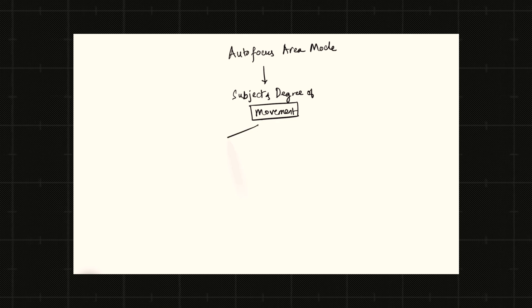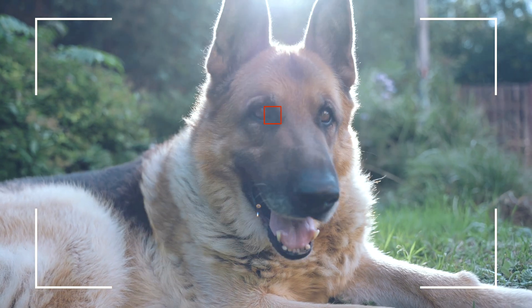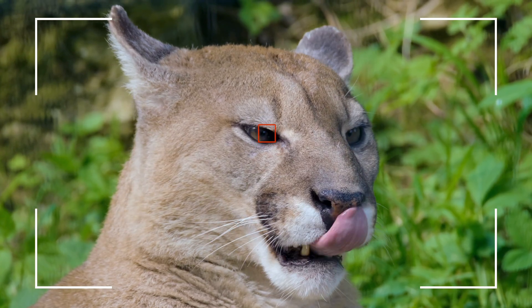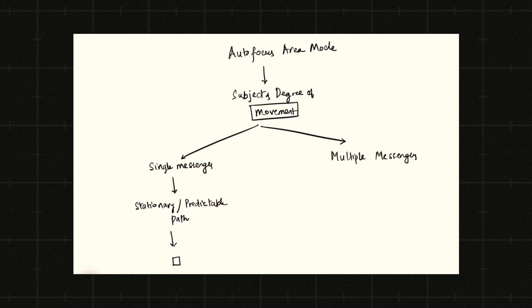Option number one is where we employ a single messenger focusing on the exact point where you want the focus to be. No confusion, no Chinese whispers. This is useful when the subject is stationary — it is excellent for portraits where you want the focus precisely at the eye. It can also be used for architecture and landscape. But in certain situations where there is a lot of movement, you may need the help of more than one messenger.